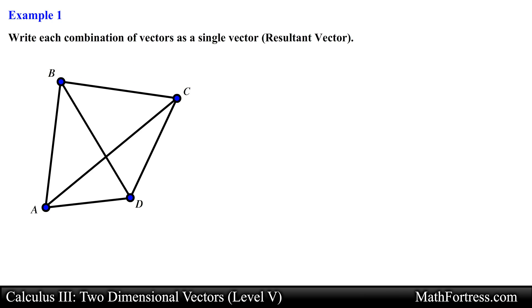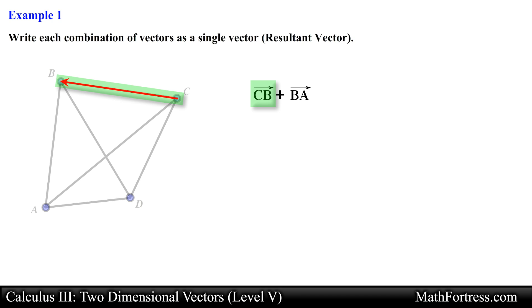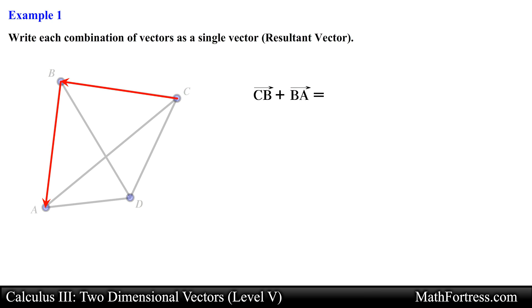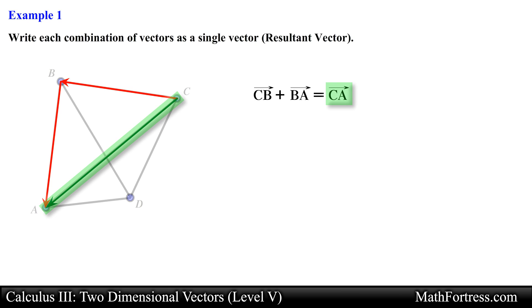Let's start with the first example. Here we are asked to find the sum of vector CB and vector BA. First let's identify each of the vectors on the diagram. Vector CB is located here and vector BA is here. Next we add the vectors geometrically by applying the triangle law. Notice that the tail of vector BA is aligned with the head of vector CB. The resultant vector extends from the tail of vector CB towards the head of vector BA, which can be denoted as vector CA.